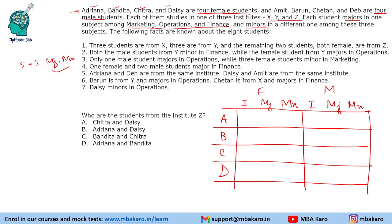We will directly jump to point number 5 because it gives direct information about names. Adriana and Dev are from the same institute, so let us say these 2 are from institute B. Similarly, Daisy and Amit are from the same institute, so let us say these 2 are from institute Q. Barun is from Y and majors in operations. Chetan is from X and majors in finance. Daisy minors in operations. We have filled this information.